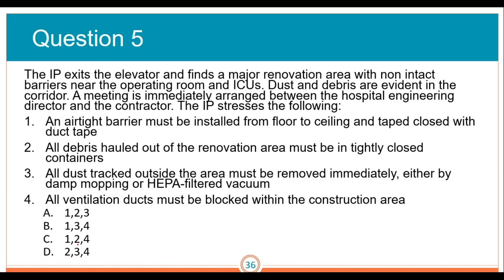Question five: the IP exits the elevator and finds a major renovation area with non-intact barriers near the operating room and ICUs. Dust and debris are evident in the corridor. A meeting is immediately arranged between the hospital engineering director and the contractor. The IP stresses: one, an airtight barrier must be installed from floor to ceiling and taped closed with duct tape; two, all debris hauled out of the renovation area must be in entirely closed containers; three, all dust tracked outside the area must be removed immediately either by damp mopping or HEPA-filtered vacuum; and four, all ventilation ducts must be blocked within the construction area.